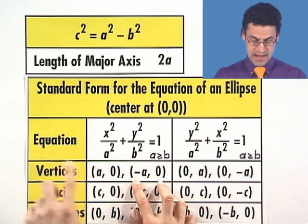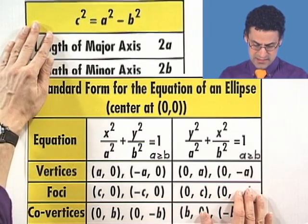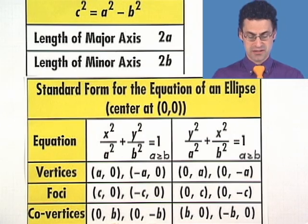Because I've gone negative a in this direction and a in that direction, so the total length is just 2a. And the minor axis is going to be given by 2b, which is the length of the line segment between these two points.